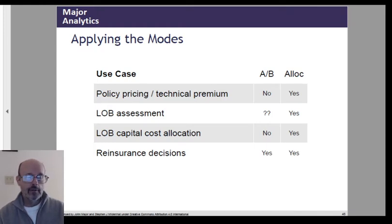Capital cost allocation - the A-B method is not useful here because allocation is going to add up costs, but the A-B method is not going to be additive. You're going to use the allocation method for that. And then reinsurance decisions - actually, both methods have something going for them, and I'm going to illustrate this shortly.